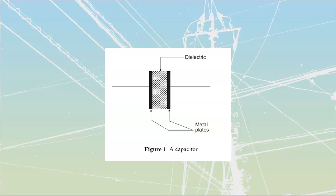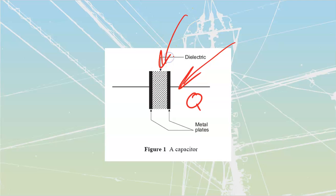First thing we're going to do is define what a capacitor is. A capacitor is simply two metal plates with room to store coulombs - that's a physical finite number of electrons - and it's going to be separated by some type of insulating material. That insulating material, once it gets placed underneath electrical stress, is going to be referred to as our dielectric.